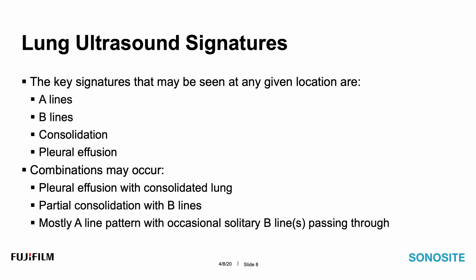Combinations of findings may occur and should be expected. This includes pleural effusion with consolidated lung — in many cases the consolidated lung in the context of a pleural effusion is compressive atelectasis and not necessarily pneumonia, which needs to be taken into consideration. You will also see a partial consolidation — sometimes called a shred sign — or subpleural consolidations with adjoining B lines, and occasionally an A line pattern briefly interrupted by some B lines passing through during tidal ventilation.